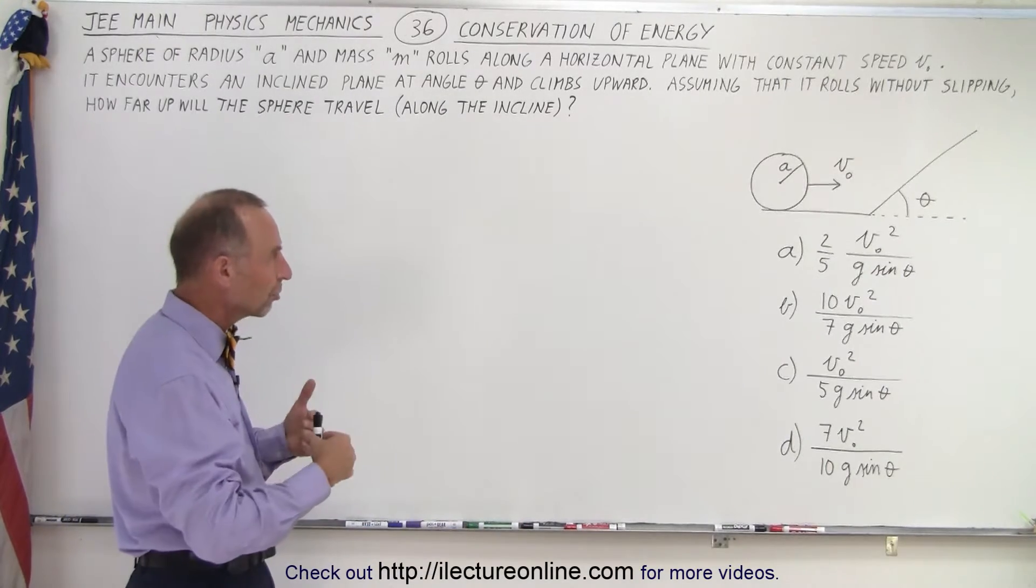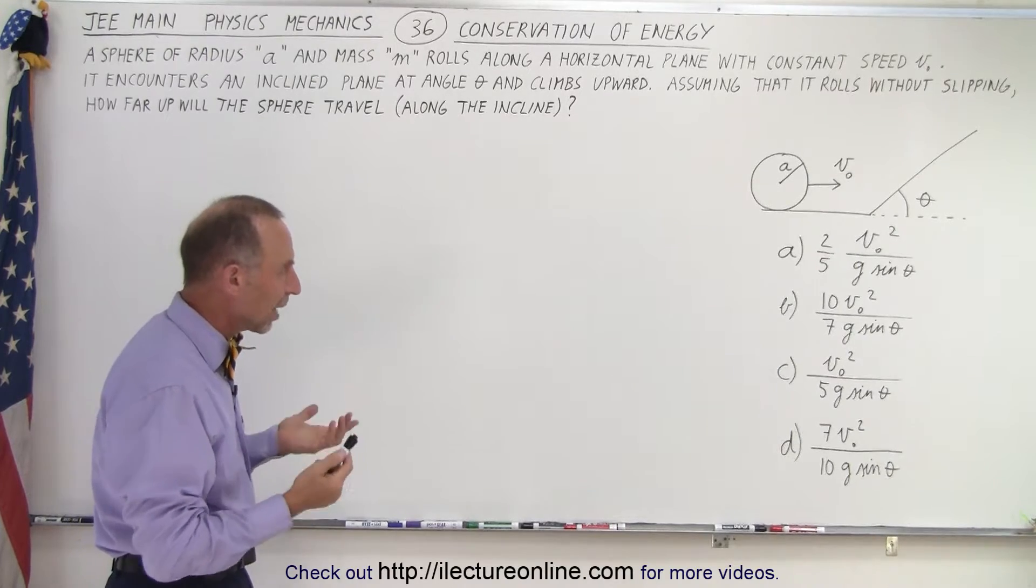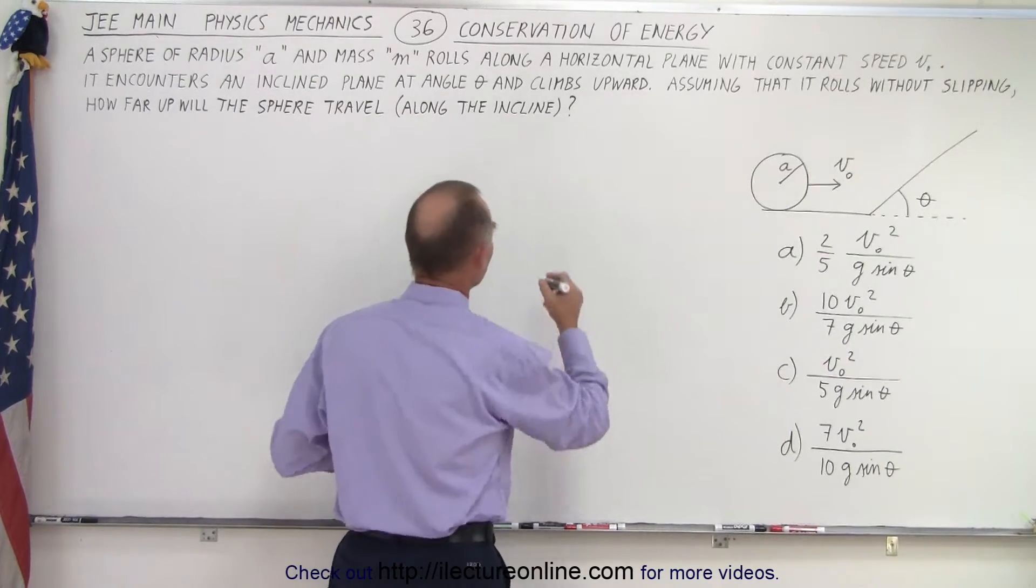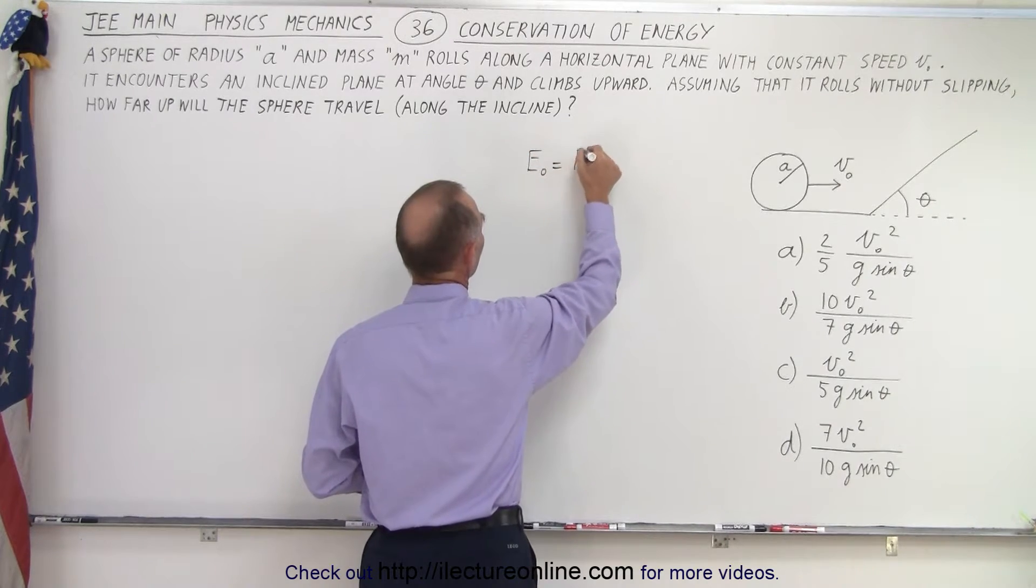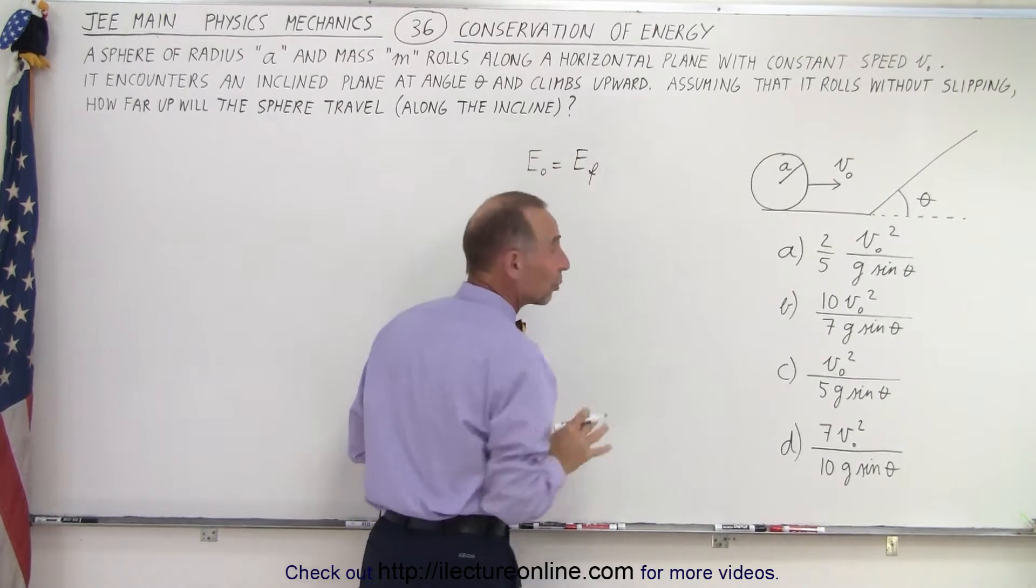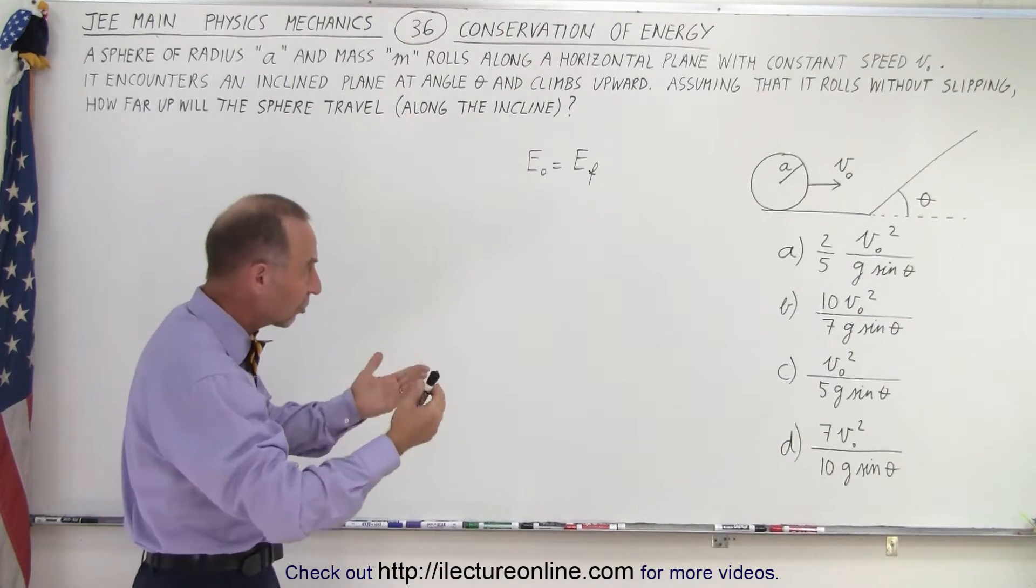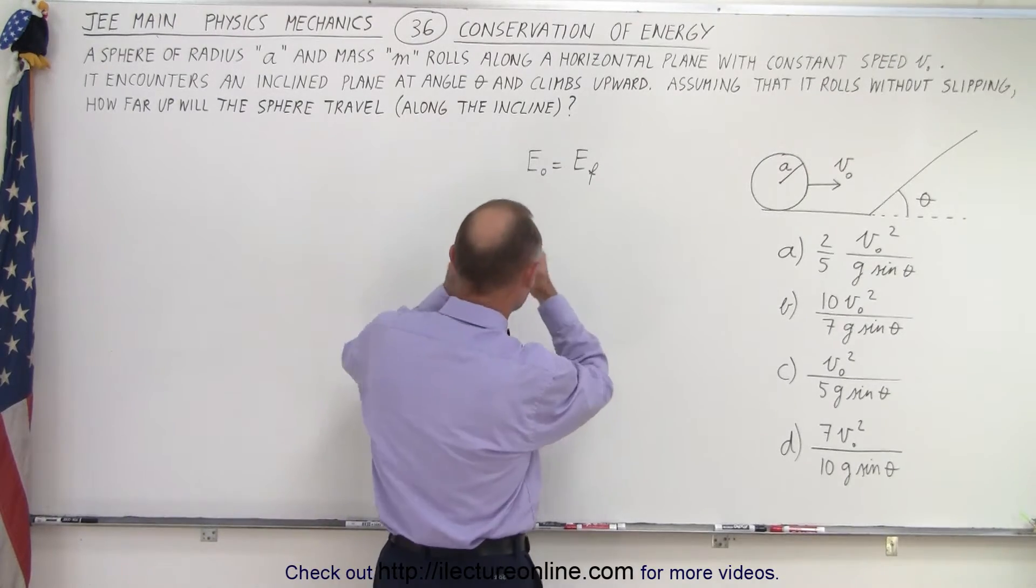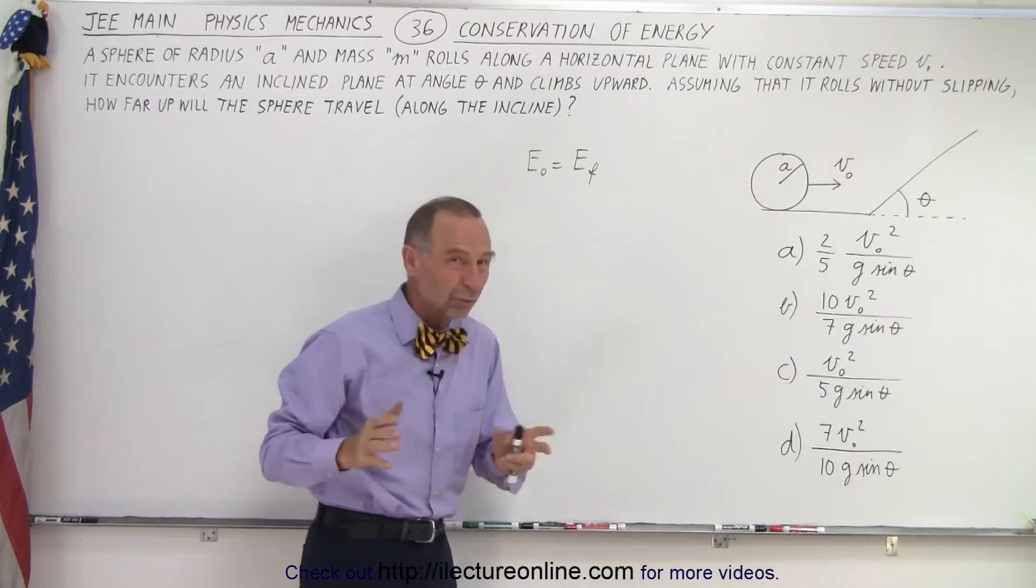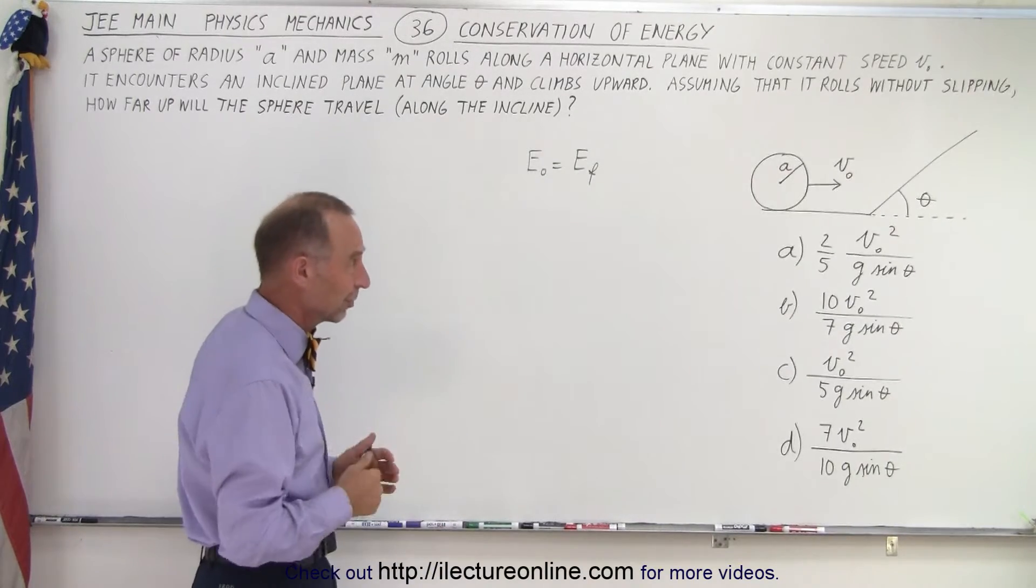Now we have to use conservation of energy. We have four possible answers. Starting out, we can say that energy initial must equal energy final. That's the typical way we deal with conservation of energy. If there's any energy loss due to friction, we add that to the right side of the equation. But in this case, we should assume that no energy is lost due to friction because they don't give us a coefficient of friction or anything like that.